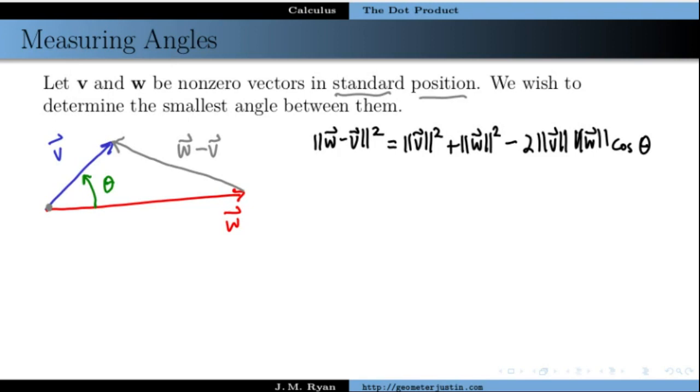Now recall, I'll write this over here, recall that the length of a vector squared is just equal to that vector dot product with itself. And we're going to leave the v and the w by themselves as they are, but we want to expand on this term, this w minus v.